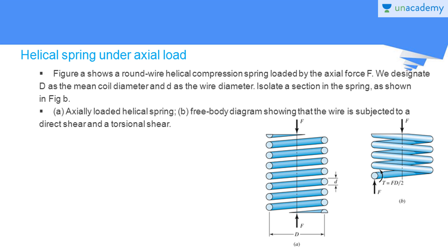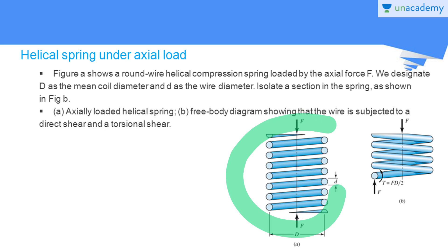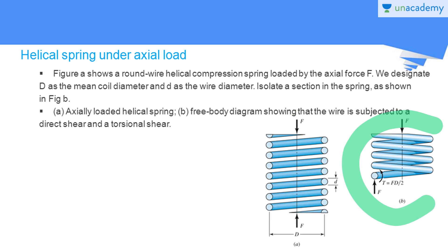As you can observe, this spring is under the application of an axial load of magnitude F which is acting through the centroid of the cross-section of the helical spring. Due to the application of this axial load passing through this axis, if we cut a portion of this spring as shown in Figure B, at the cross-section of the spring wire you will find two types of loadings are acting.